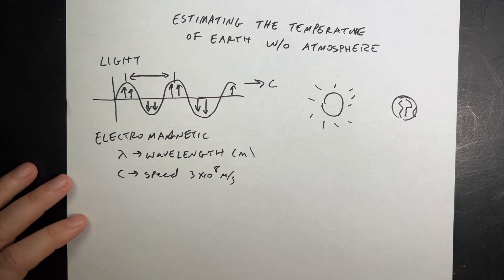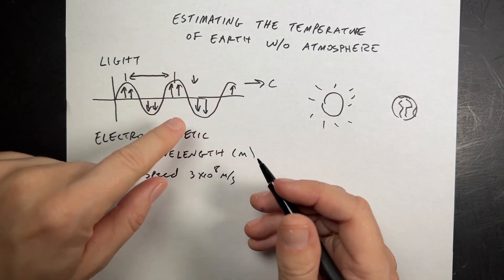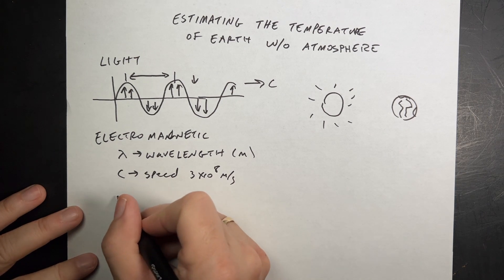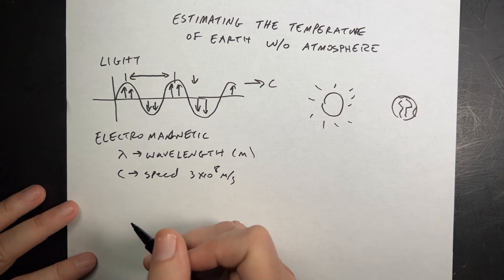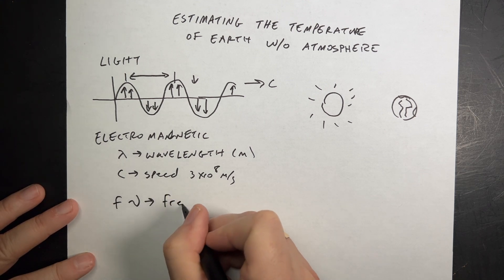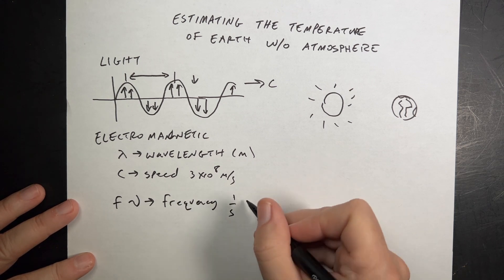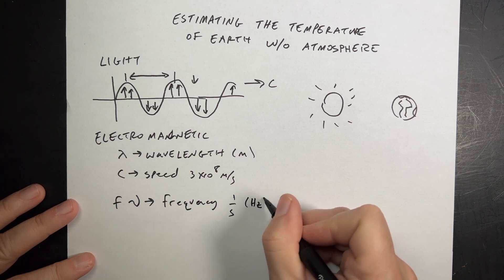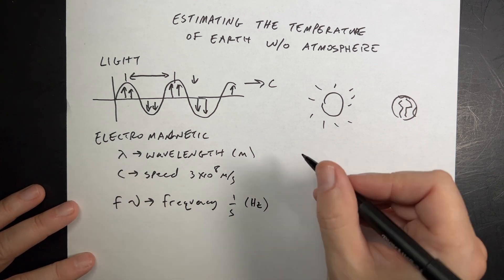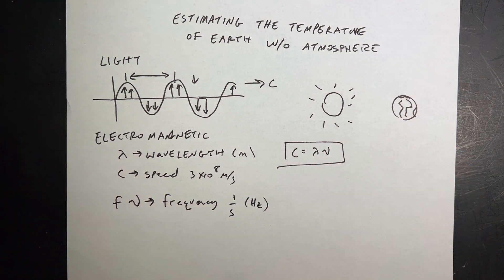Finally, imagine standing at one point and counting how many peaks pass per second — that's the frequency. Some use F for frequency, some use the Greek letter nu, which looks like a V but isn't. Frequency is in units of one over seconds, which we also call Hertz. These three quantities are related: C equals lambda times frequency. That's true for all electromagnetic waves.